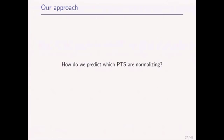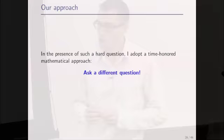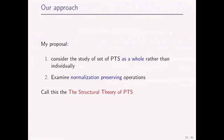How do we attack this problem? When you have a hard question, you decide not to answer it and ask a different question that sheds light on the original. The different question I ask is: given normalizing Pure Type Systems, what are the operations that preserve normalization? What can I do to a PTS to modify it such that the result is still normalizing if the original ones are? This is what I call the study of the structural theory of pure type systems — I want to examine the set of all pure type systems and understand the structure of this large set, and understand how you construct new pure type systems in ways that preserve normalization.